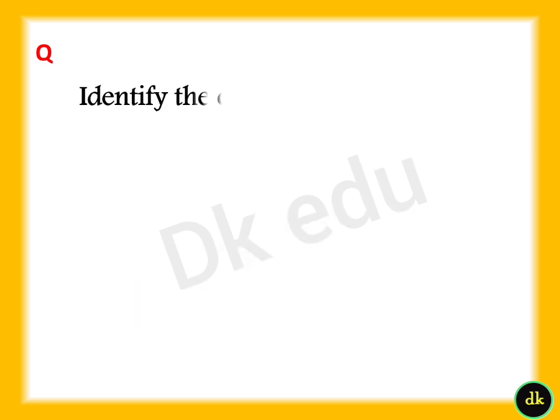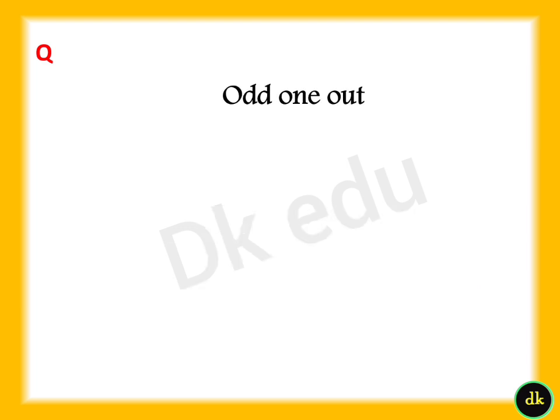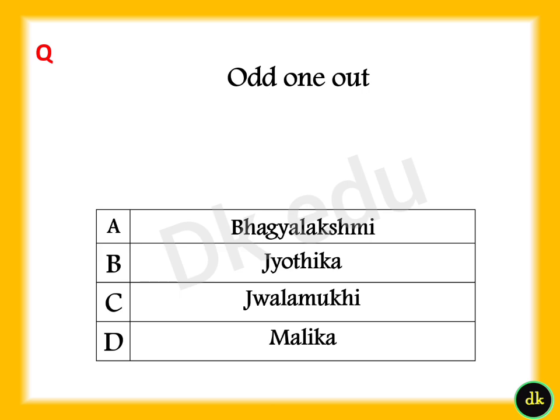Identify the characteristics of Nilam mango tree. Answer: Option C, Needs special care. Odd one out — Answer: Option C, Jala Murky. Jala Murky is chili; others are peas.